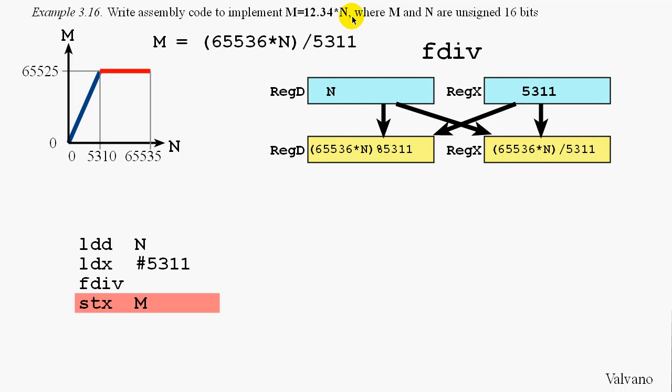But the problem didn't say what to do if the input were too large. In other words, if the input were larger than 5310, the FDIV instruction could not put the result back into register X. It's too big. And therefore, an overflow would have occurred.